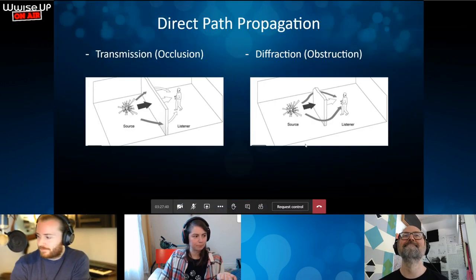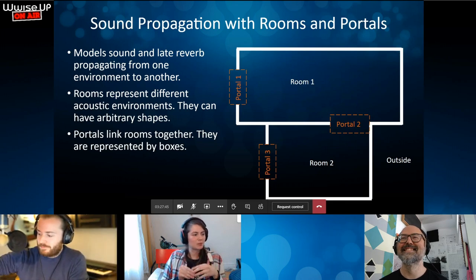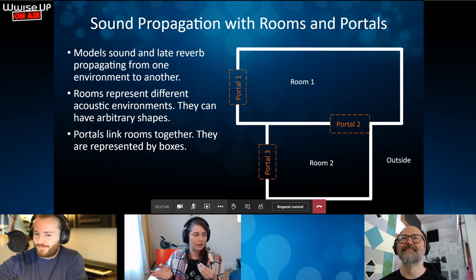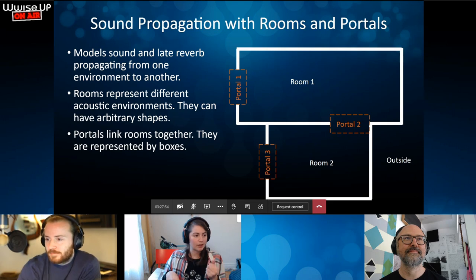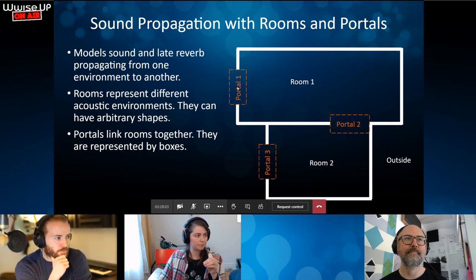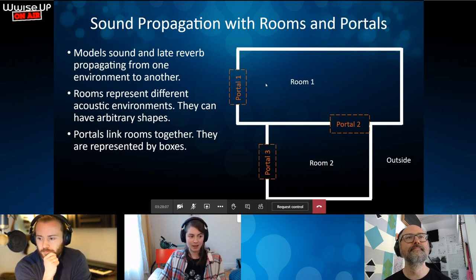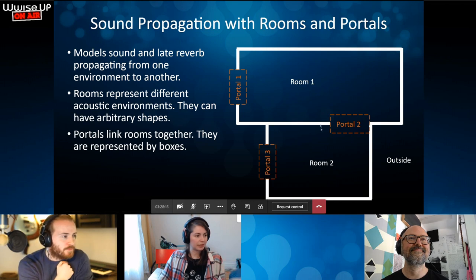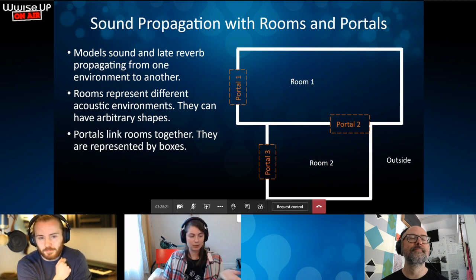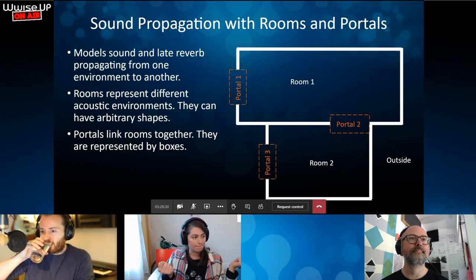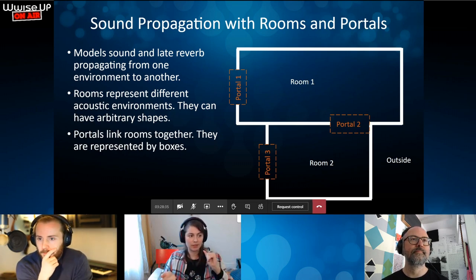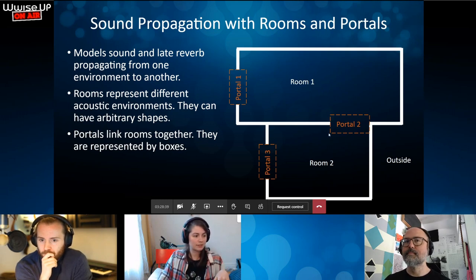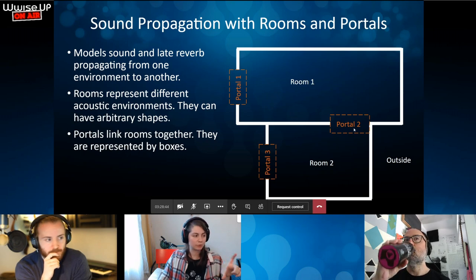So, why rooms and portals? They can propagate the direct sound, and they can also propagate the reverb of sounds between different rooms. Rooms send to Spatial Audio; the only thing needed is to know if a game object is inside a room or not. It doesn't need a special shape — it just detects if the game object is in or out. Portals, though, must be a box-shaped object placed between two rooms to connect them.